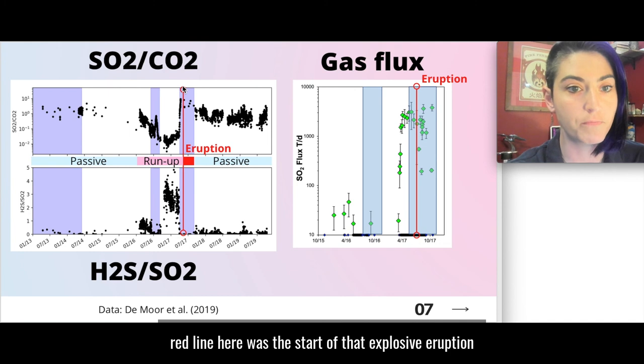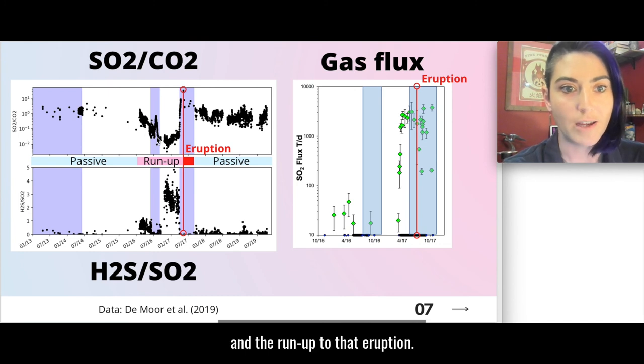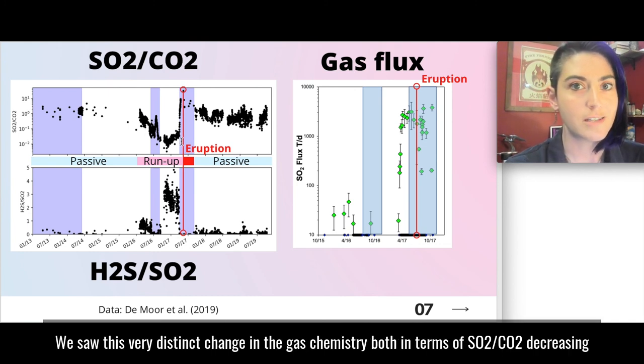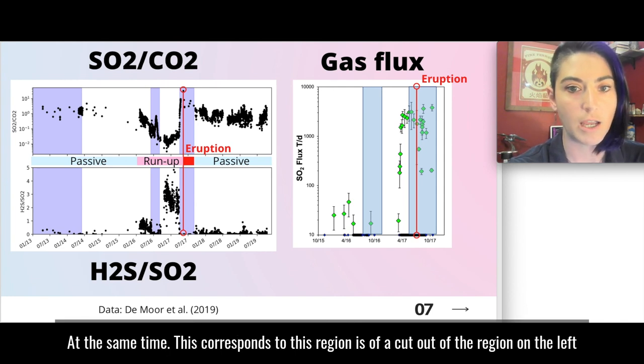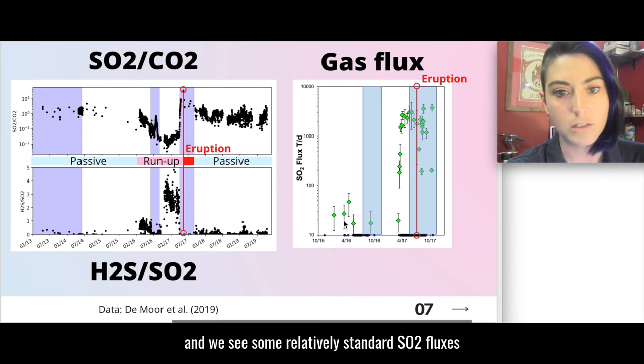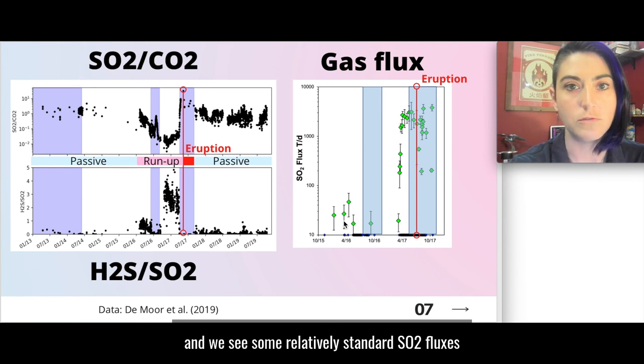So we have two what I'm calling passive regions where we had sort of typical behavior for Poas, maybe some of these small to medium sized phreatic eruptions, but typical background levels of what we'd expect to see in the gas. And then we have the run-up to the eruption, which was that the eruption occurred at this red line here was the start of that explosive eruption. And the run-up to that eruption we saw this very distinct change in the gas chemistry both in terms of SO2/CO2 decreasing and H2S/SO2 increasing dramatically. At the same time this corresponds to this region, sort of a cutout of the region on the left, and we see some relatively standard SO2 fluxes. And again note that this is in a log scale.